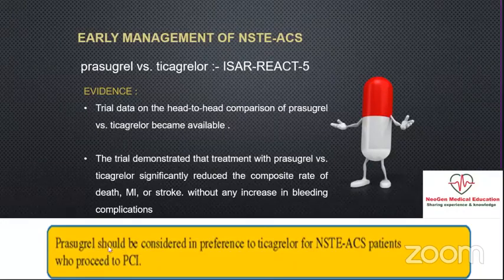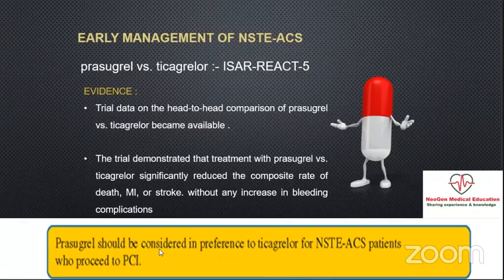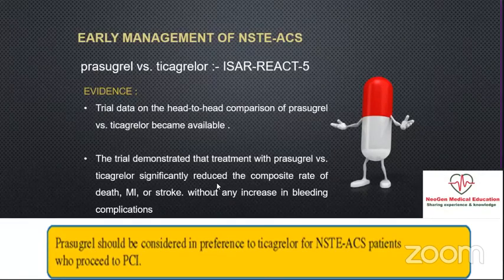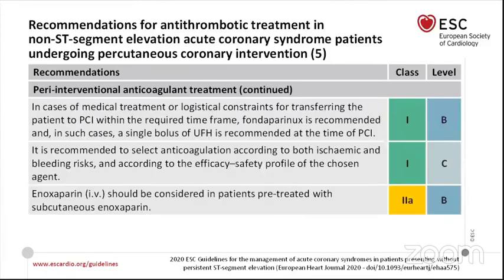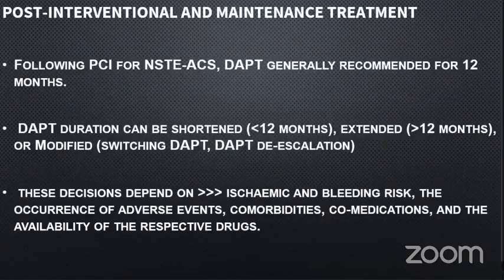Regarding which antiplatelet therapy to give in the cath lab: the ISAR-REACT-5 trial answers this question — prasugrel should be considered in preference to ticagrelor for non-STEMI patients who proceed to PCI. Apart from antiplatelet therapy, the guideline recommends Class 1A use of parenteral anticoagulation, which is mainly unfractionated heparin. However, if the patient is not going to the cath lab or is receiving medical therapy only, then fondaparinux is the preferable option. At this point, I would like to stop here. Thank you.